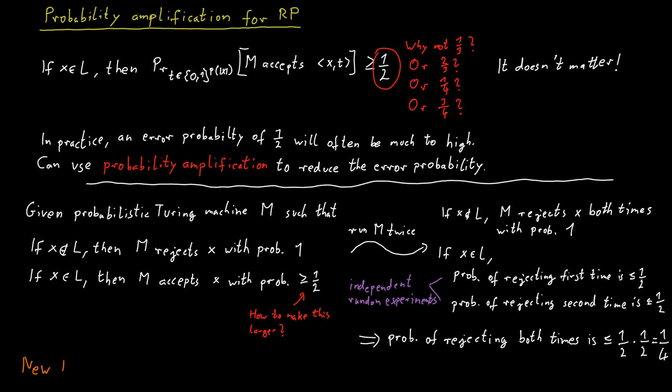So, here is our new machine. The machine will simulate the probabilistic Turing machine we had before twice. If both times the result is reject, then we reject. But if at least one of the times the probabilistic Turing machine accepts, then our new machine also accepts. And this new machine will reject every word that is not in the language by the reasoning we had before, and it will accept a word that is in the language with probability at least three-quarters. It will only be wrong one-quarter of the time at most.